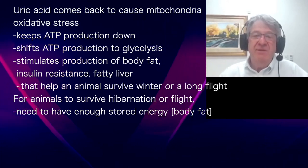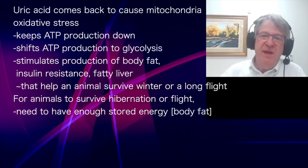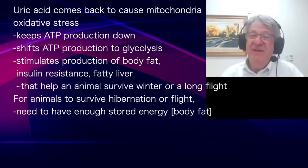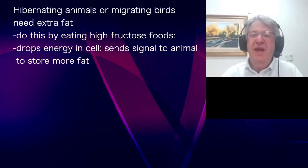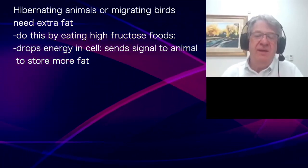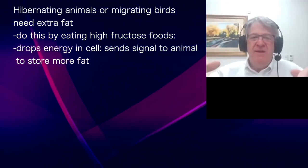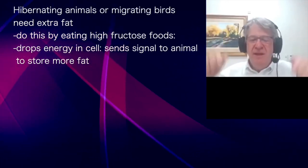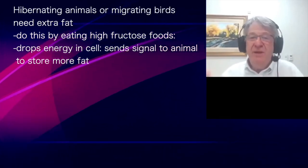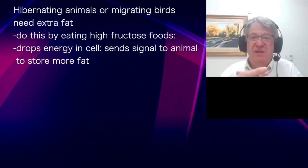Some animals know there will be a long period without food — like winter, or a bird migrating 5,000 kilometers without stopping — so they must store extra fat. They do this by eating foods that contain or can make fructose. Fructose drops the energy in the cell and keeps it at a lower level, acting like an alarm signal. The animal thinks it doesn't have enough energy, even though it has stored fat — it tricks the system into thinking there's not enough energy, which activates foraging, hunger, and related processes.